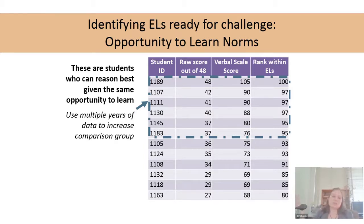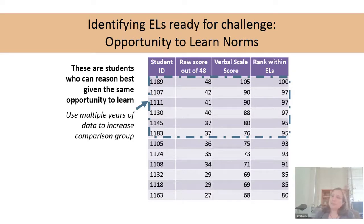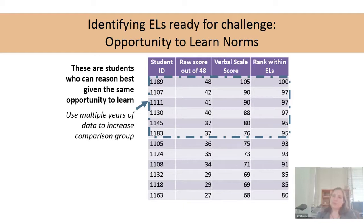You can't compare them to the national norms because those are students who were born in the U.S. or are native English speakers. But comparing them to similar students, you can identify those who are learning English most quickly and those who have especially strong verbal abilities. Likewise, you can identify students with the weakest verbal abilities, which is helpful for planning instruction. You might have an accelerated ESL program or structured tutoring for students who may struggle more. Looking at these students compared to other similar students can be very valuable — this would be called opportunity-to-learn norms or local norms.